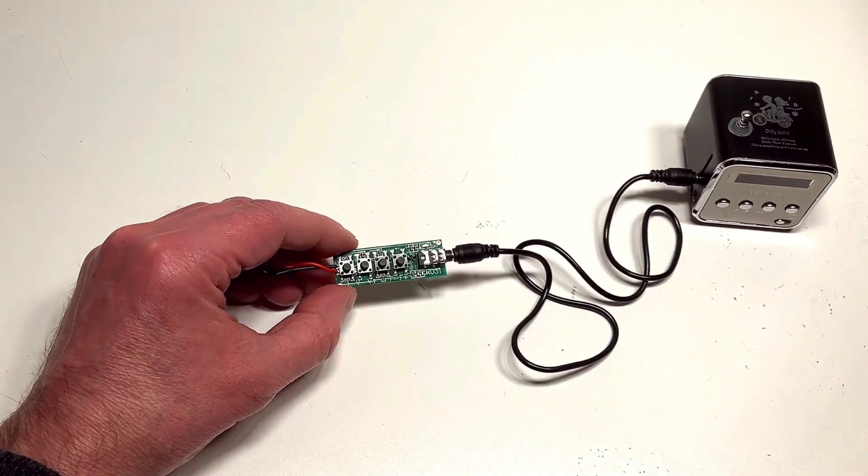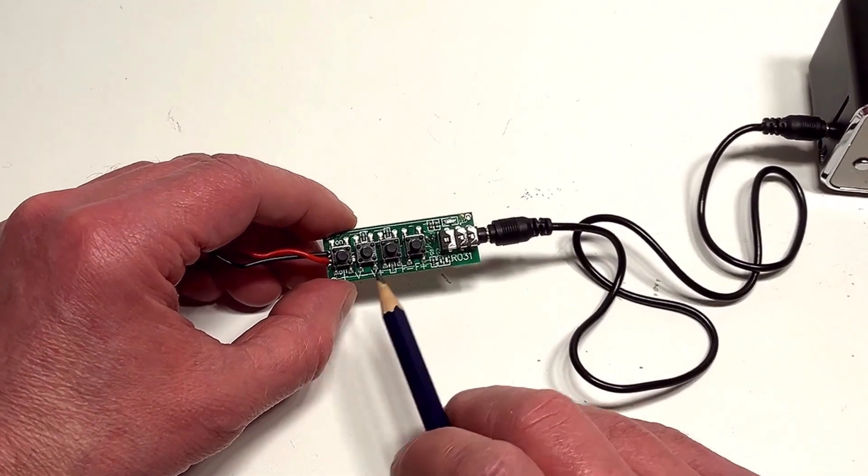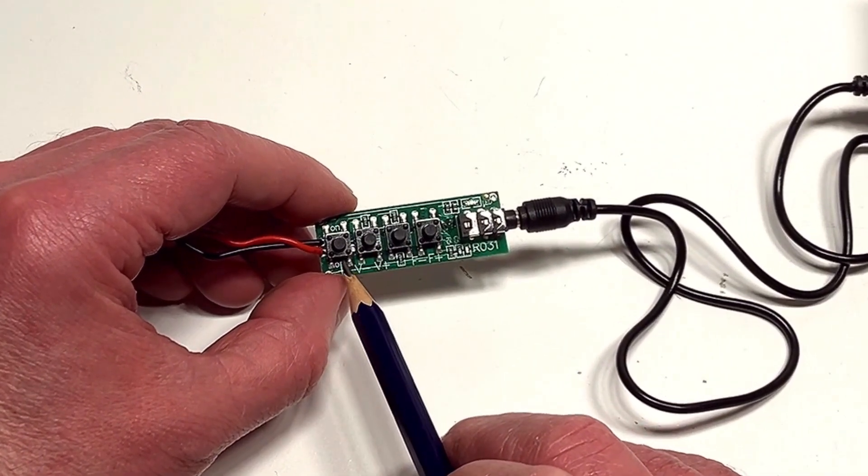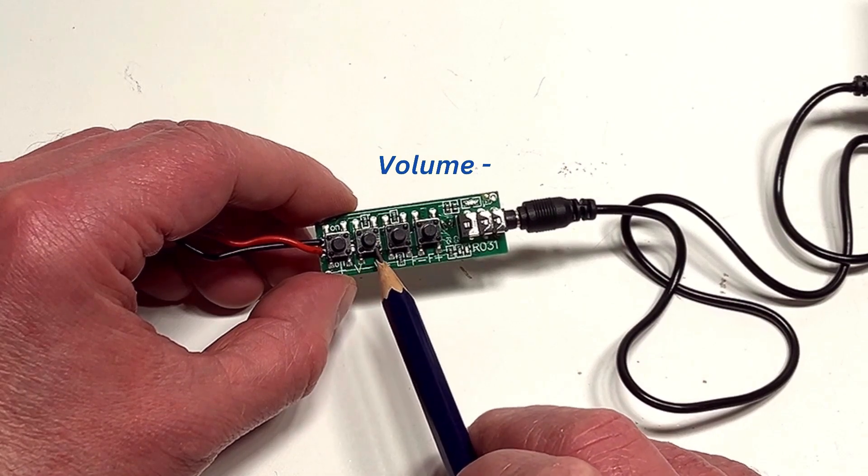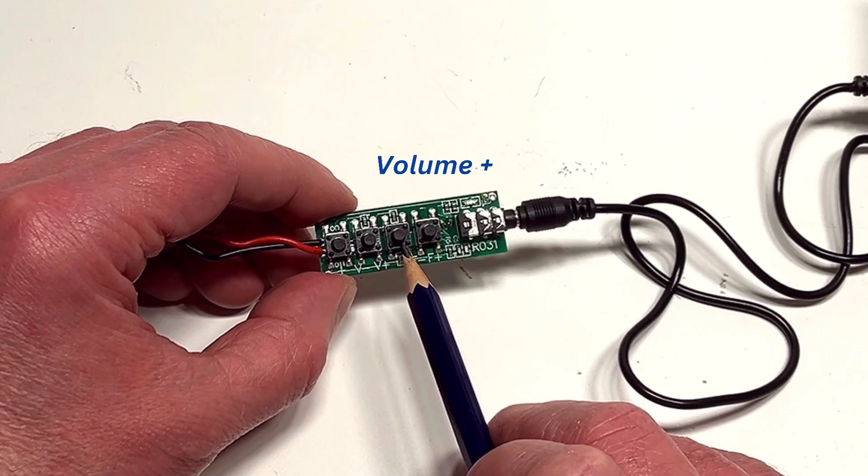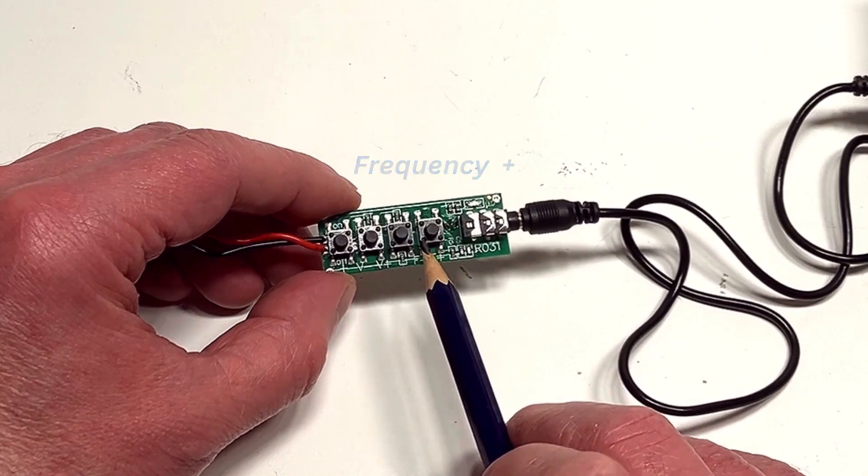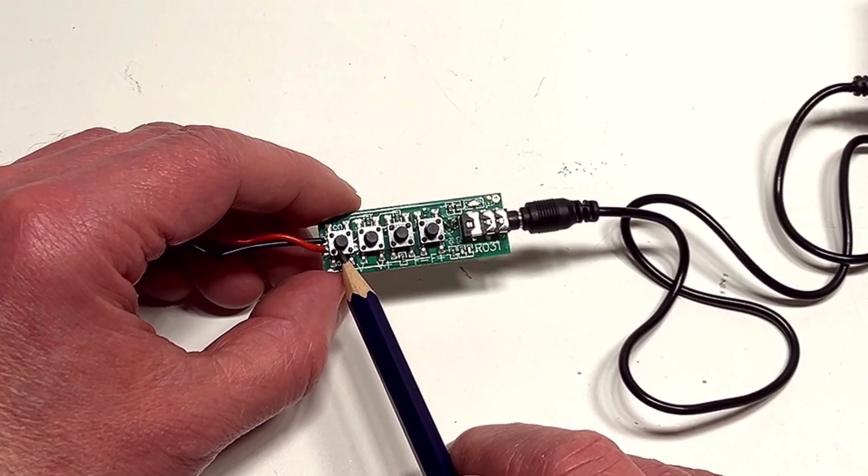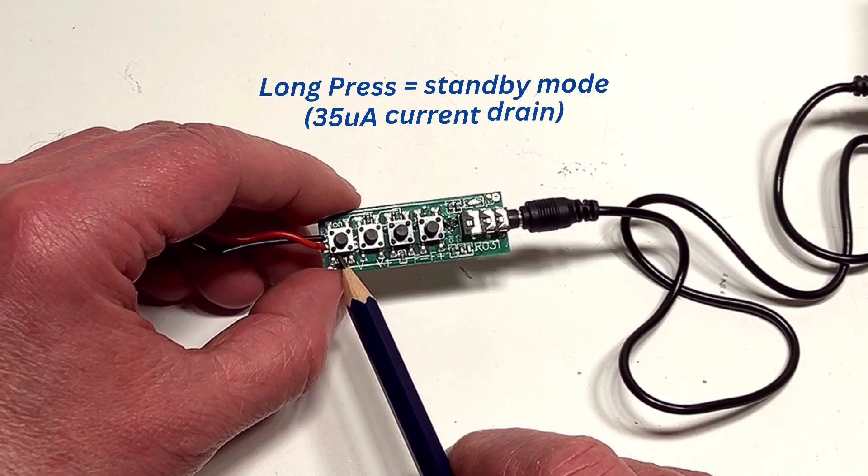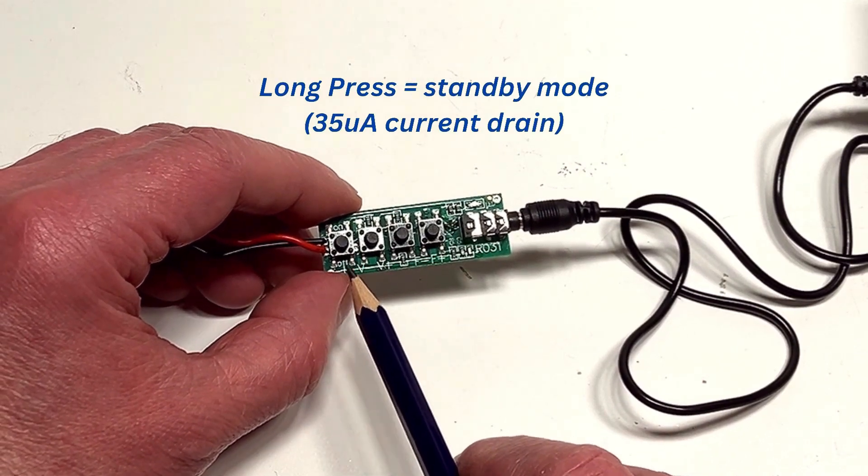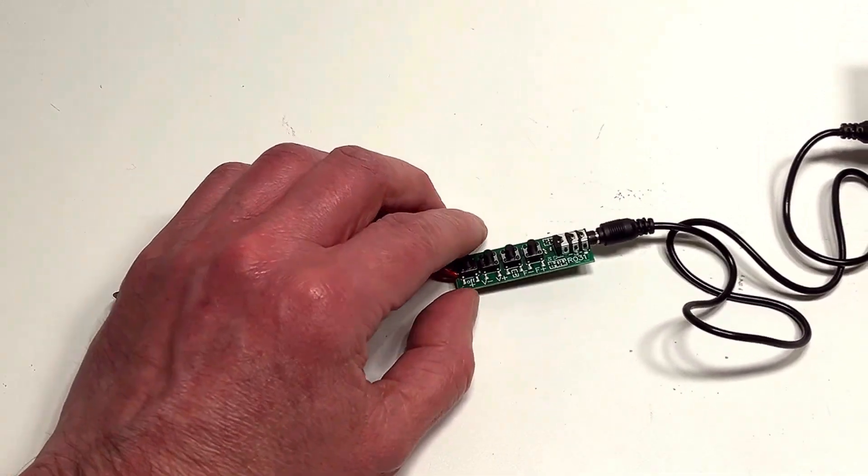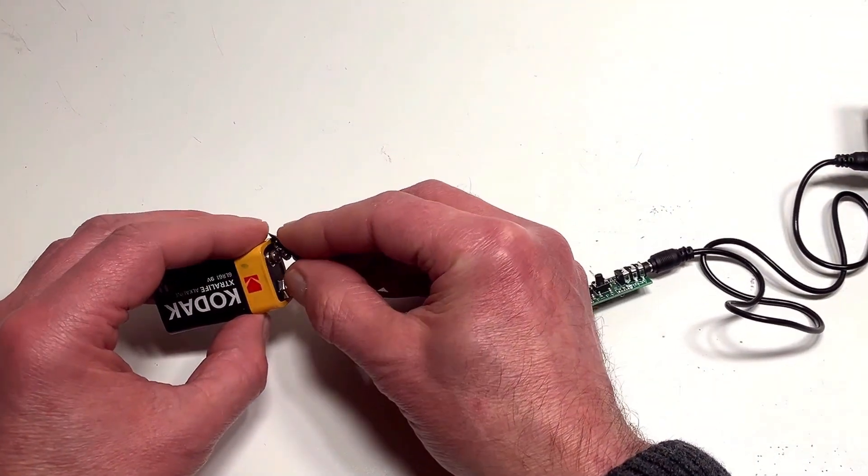Now before I put a battery on it, let's quickly go through those push buttons. So we've got four push buttons. The left hand one there, that's volume down, volume up, and then we have frequency down and frequency up. That's when you're searching the frequencies of your various stations. That left hand button as well, if you hold it down just a little bit longer, what it does is you push this into a standby mode as well. Again, a useful little feature.